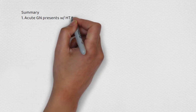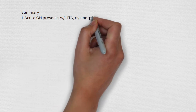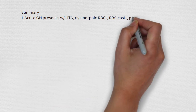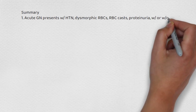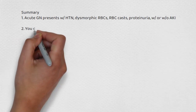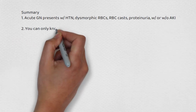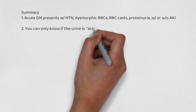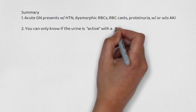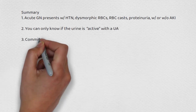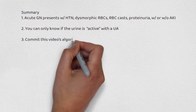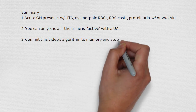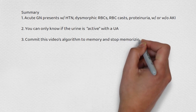In summary, acute glomerulonephritis presents with hypertension, dysmorphic red cells, red cell casts, and proteinuria, with or without AKI. You can only know if the urine is active with a UA, and you need to commit that algorithm of the GN diseases to memory.